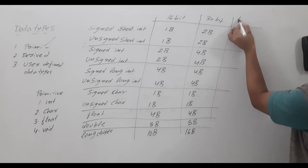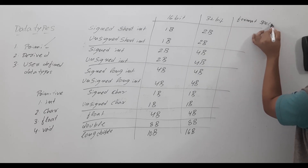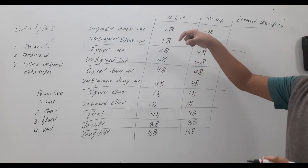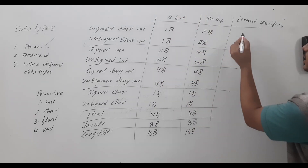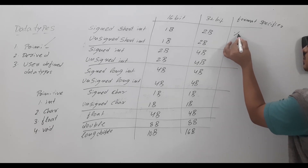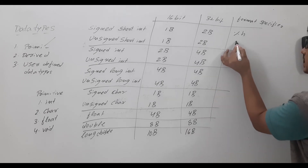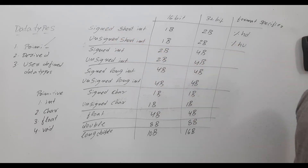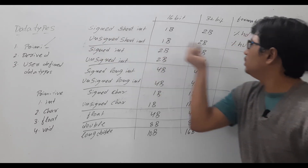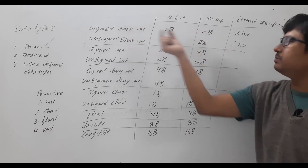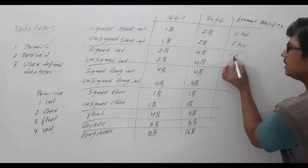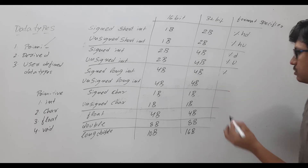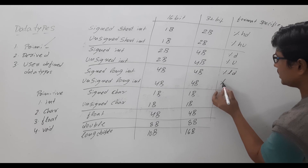Now let me discuss the format specifiers. The format specifier depends on the data type you use, while memory depends on the compiler. For signed short int it is %hd, for unsigned short int it is %hu — you can remember: unsigned uses 'u'. For signed int it is %d, unsigned int is %u. For signed long int it is %ld, unsigned long int is %lu.